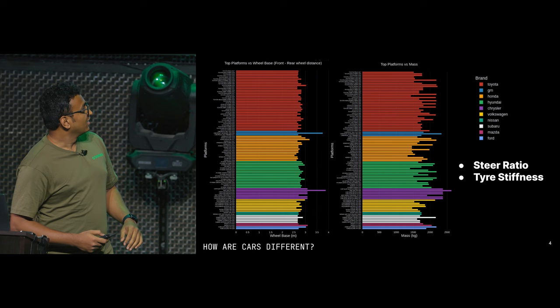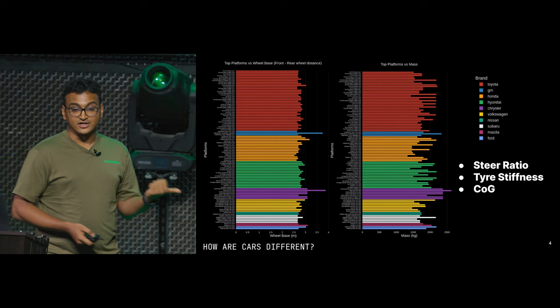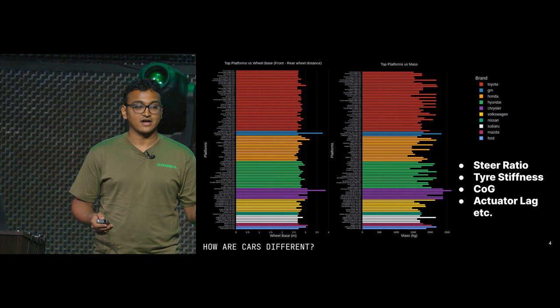Tire stiffness — the quality of your tire, how much torque your tire provides while turning — is also different. The center of gravity is different in all cars, depending on how many people are in the car. Then there are actuator lags: each brand and platform has different ways of processing the signal we send to the car. When we say do this turn, there is internal processing happening in the car, and then it actually actuates that in the final actuator, and there is a lag which is also different for different brands.